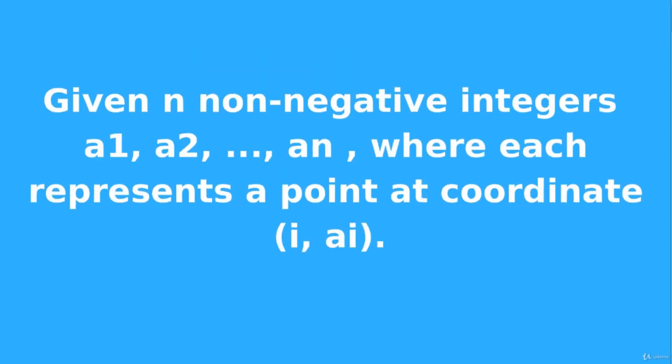Let's start with the problem description. You are given an array of n non-negative integers, and each integer represents a point at coordinate i with some value at position i. The position of each element is the x-axis, while the value is the y-axis of the point.